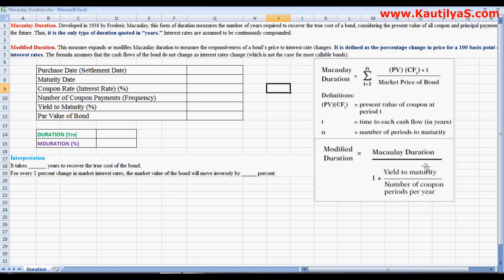However, in Excel we have built-in functions like DURATION and MDURATION to measure Macaulay duration and modified duration. DURATION measures the Macaulay duration whereas MDURATION measures modified duration.